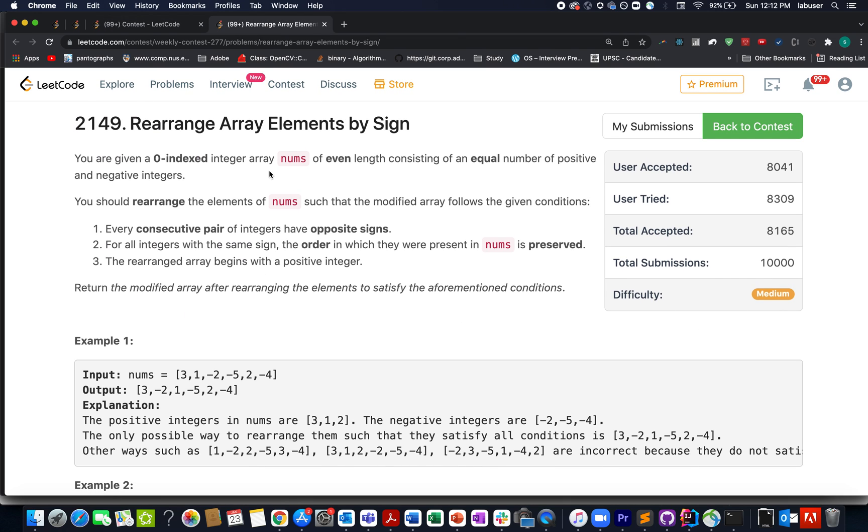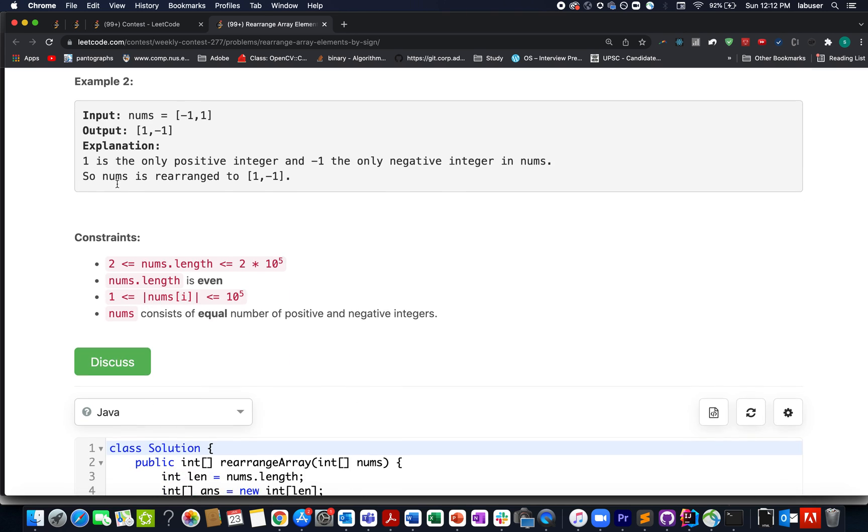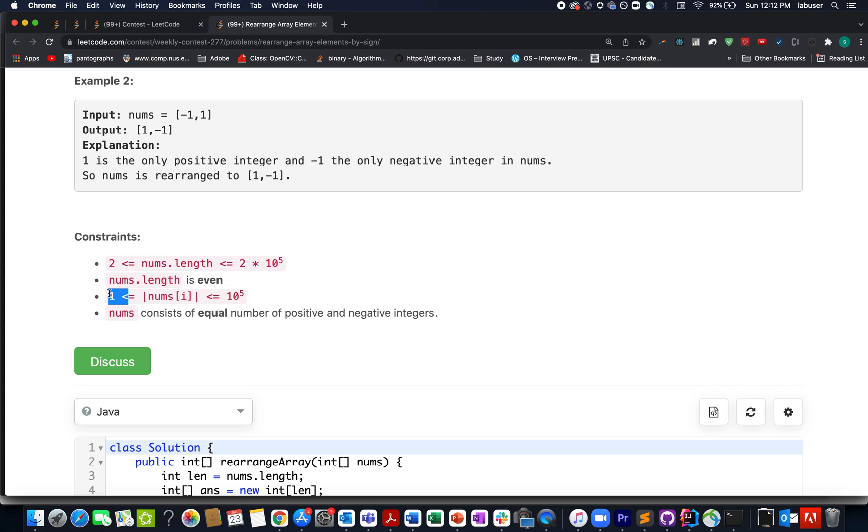Here in this question we are given an array of integers wherein elements can be positive in nature and negative in nature. It is also given that the length of the array will be always even in nature and it will have equal number of positive and negative elements. Also there will be no element that is equal to 0. It is given in one of the constraints. The range is starting from 1 up till 10 raised to 5, the modulus value of that numbers.